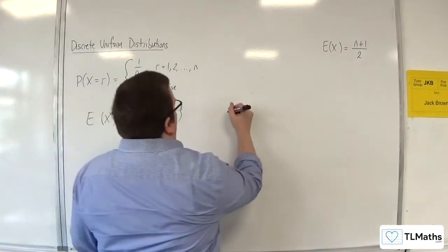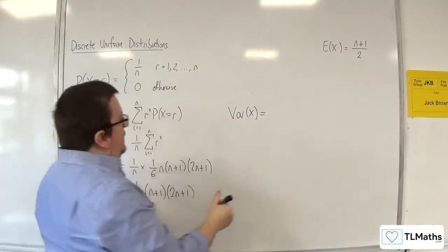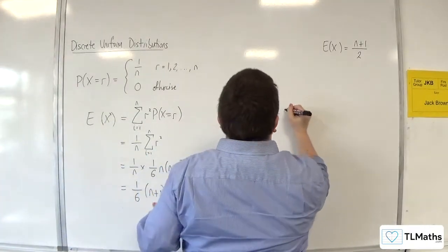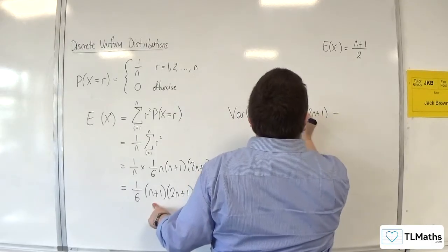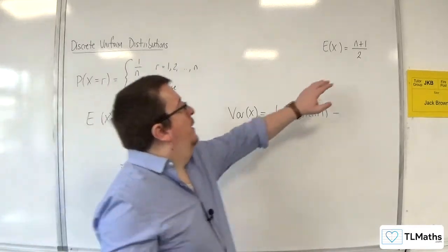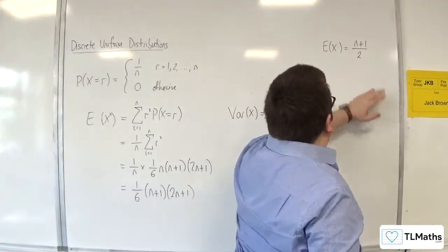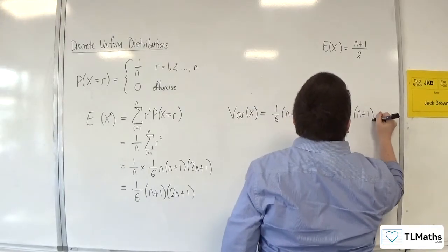Now we want Var of X, which will be E of X squared, so 1 sixth n plus 1, 2n plus 1, take away E of X all squared, so that's squared. So that's 1 over 4, n plus 1 squared.